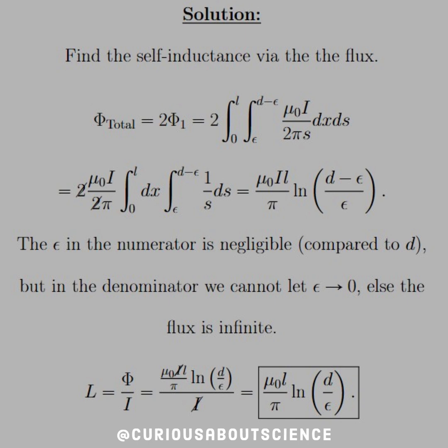And if we have that, that's going to say that the flux is infinite. That's not physical. So we'll just approximate this flux by letting ln of d minus epsilon over epsilon go to ln of d over epsilon.